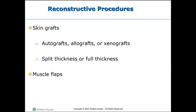A split-thickness graft contains the epidermis and a portion of the dermis, in contrast to a full-thickness skin graft, which consists of the entire epidermis and dermis. Muscle flaps use only muscle for defect coverage, primarily to provide well-vascularized soft tissue that is relatively resistant to infection. A muscle flap offers a vascularized surface for skin grafts and is commonly used to eradicate infection and revitalize bone.